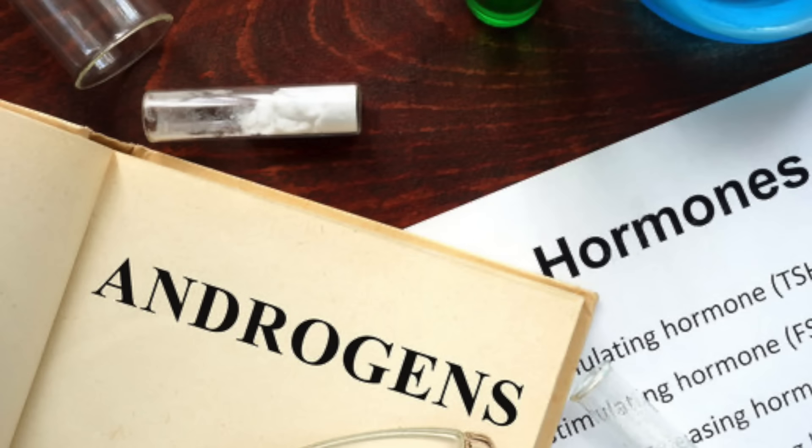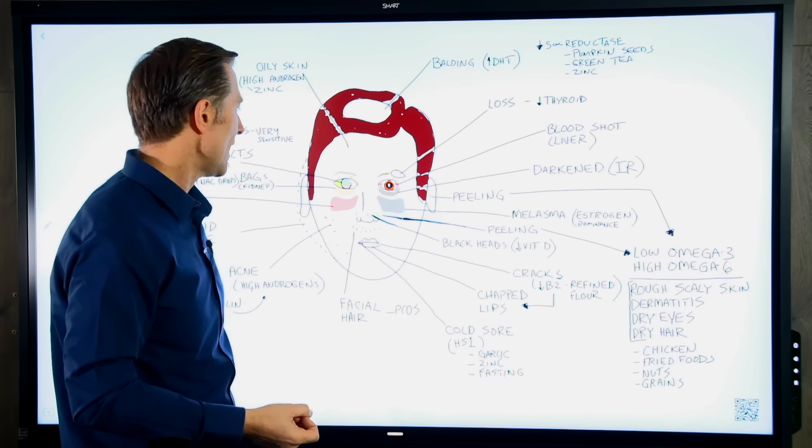Okay. Facial hair. Okay. We talked about that. If female, that means too much androgens, could be polycystic ovarian syndrome. And the way that you get too much androgens is by having too much insulin. So again, the common theme is to go low carb and not eating so frequently as in doing intermittent fasting.